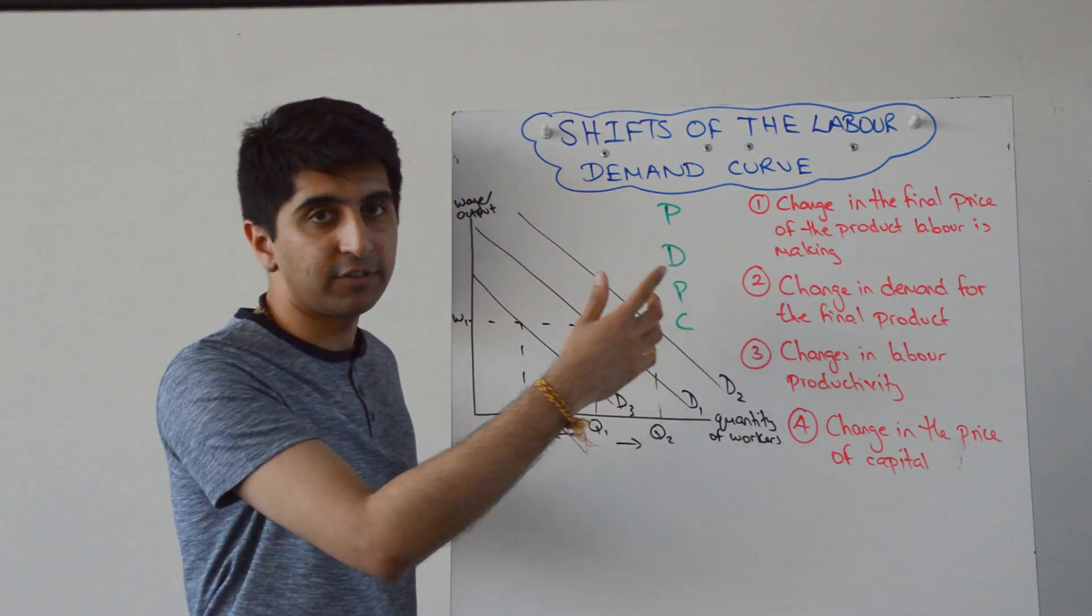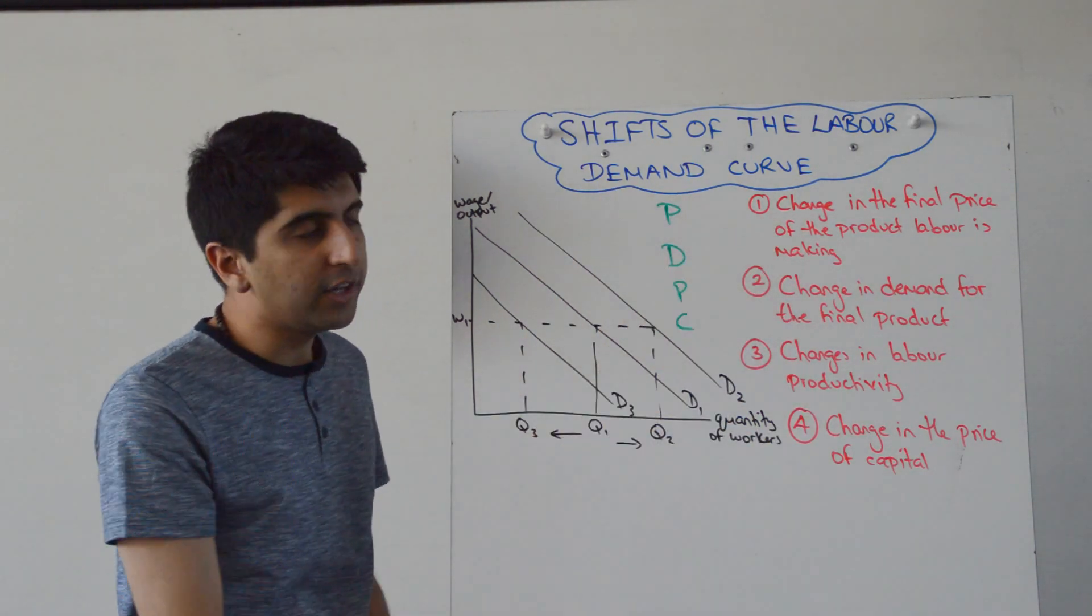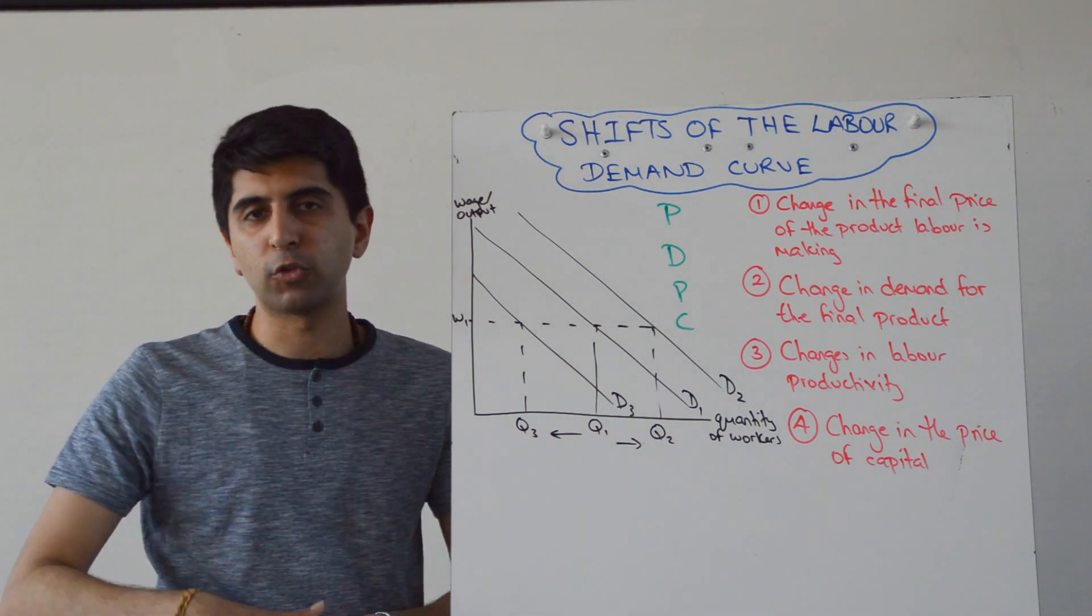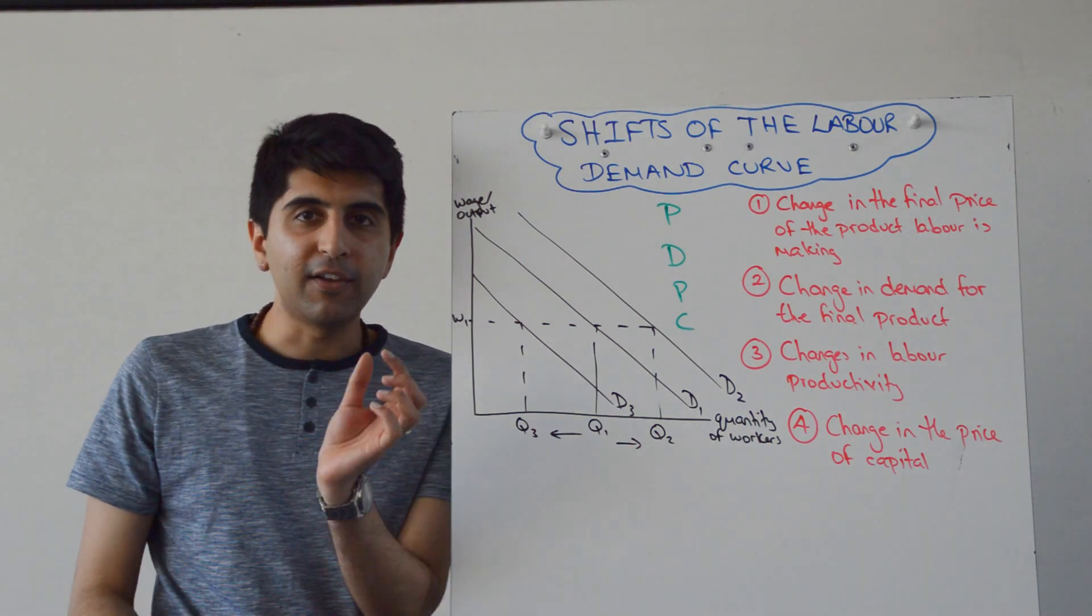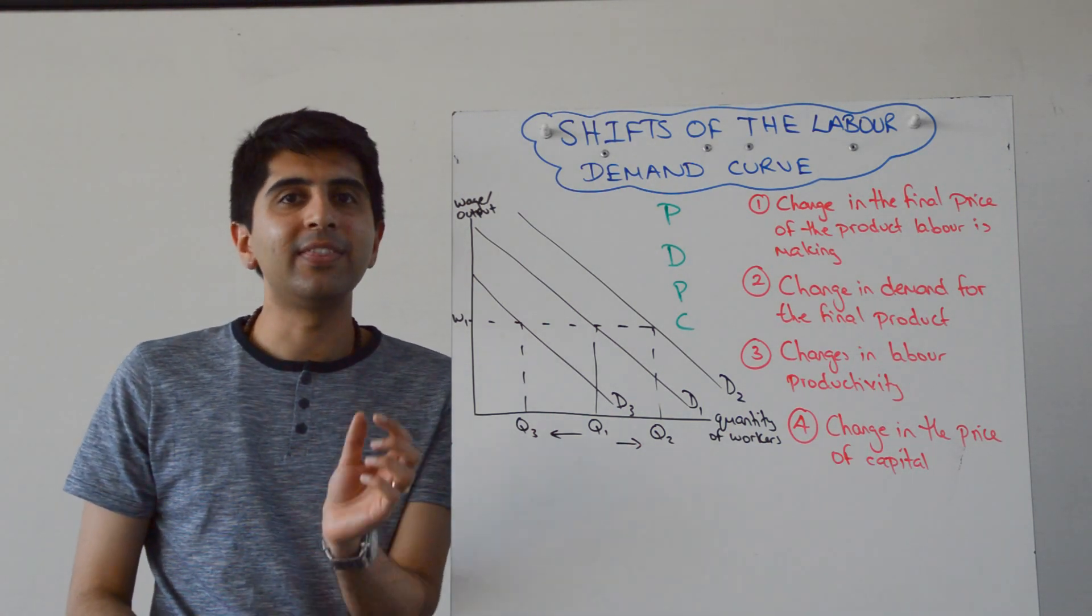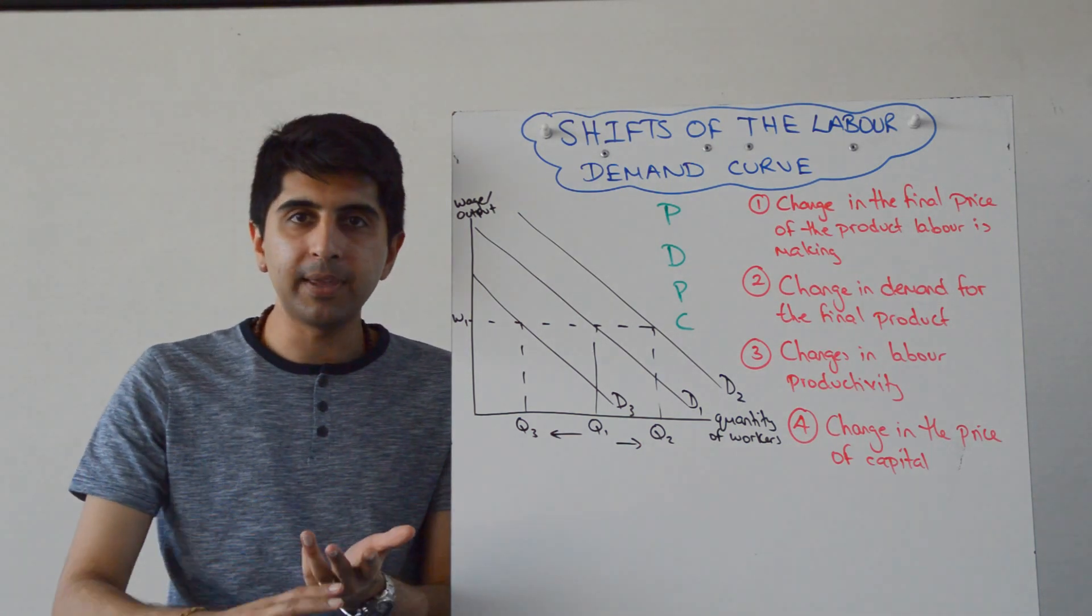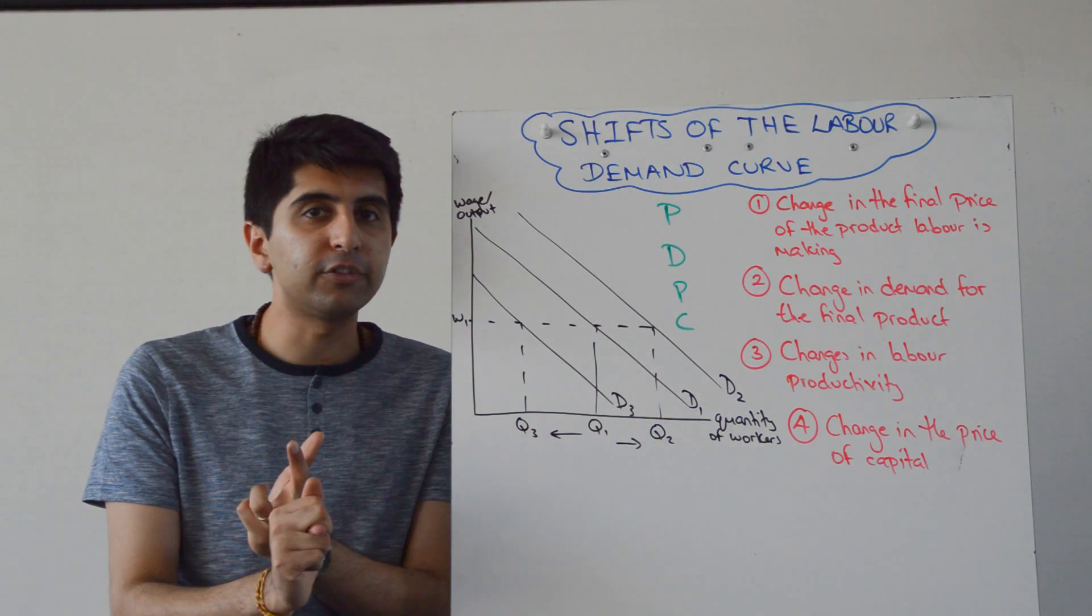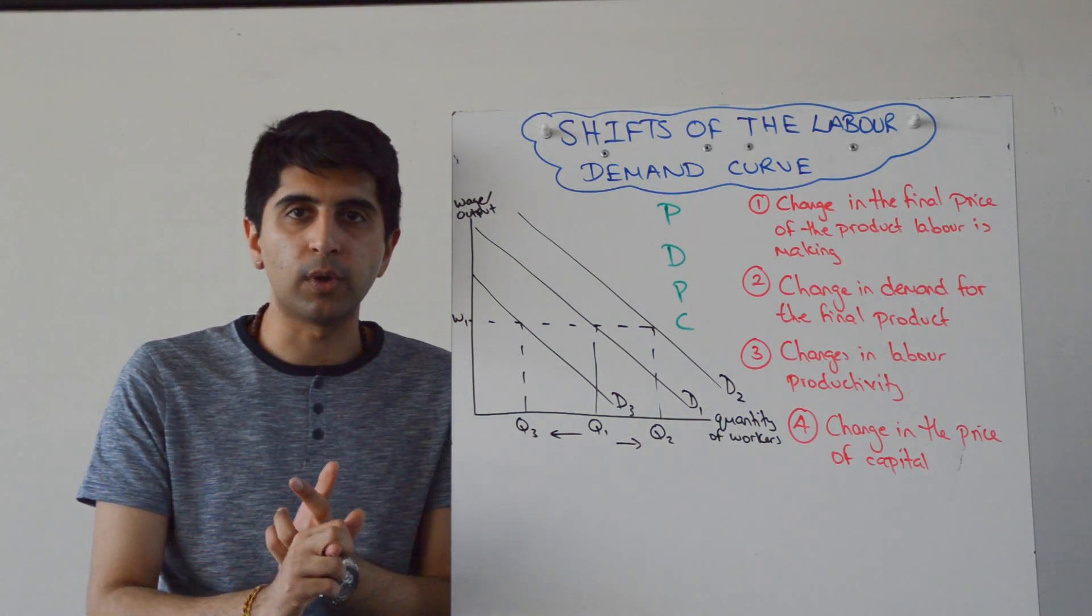Let's take the first shifter. PDPC, what's the first P? Well, the change in the final price of the product that labour is making. So whatever that worker is actually making, if the price of that product changes, that's going to affect MRP. Remember, MRP is marginal physical product or just marginal product times marginal revenue. So if the price of the final product changes, marginal revenue will change as well.